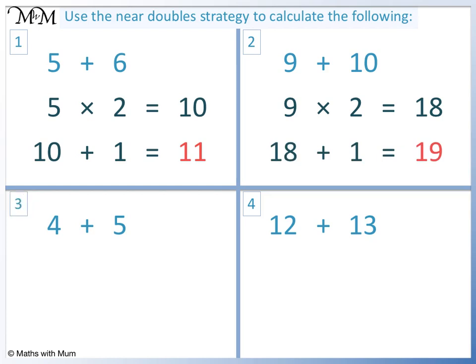Question 3. We double 4. 4 times 2 equals 8. Because 5 is 1 more than 4, we add 1. 8 add 1 equals 9.